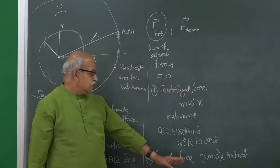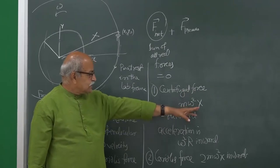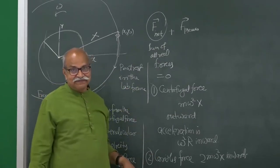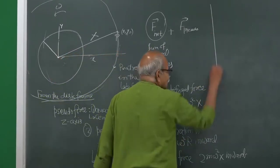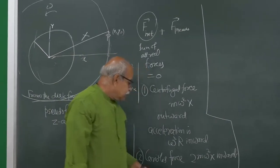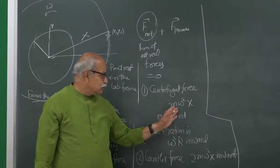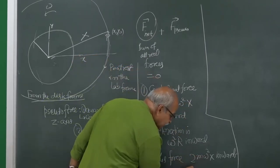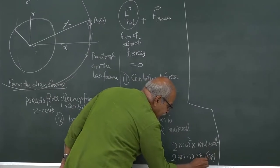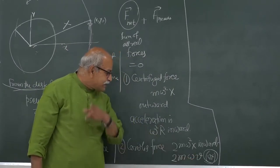One force is outward, one is inward, and the inward is double the outward. The resultant of these two is inward with magnitude m·ω²·X, and then mass times acceleration equals the total force — real plus pseudo. So from these examples you can work out what the Coriolis force is. Note that they look similar apart from the factor of 2, but this Coriolis term is like 2mωv, since ω times X is v.